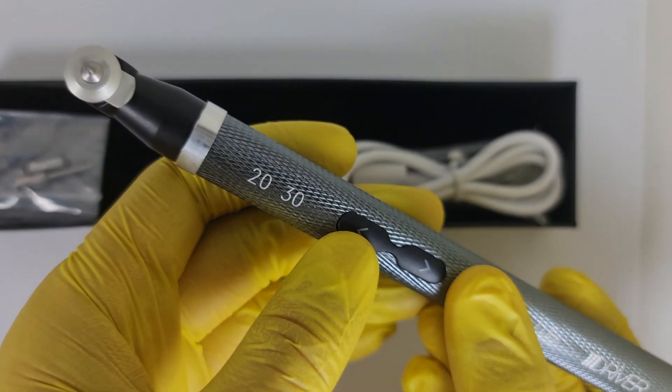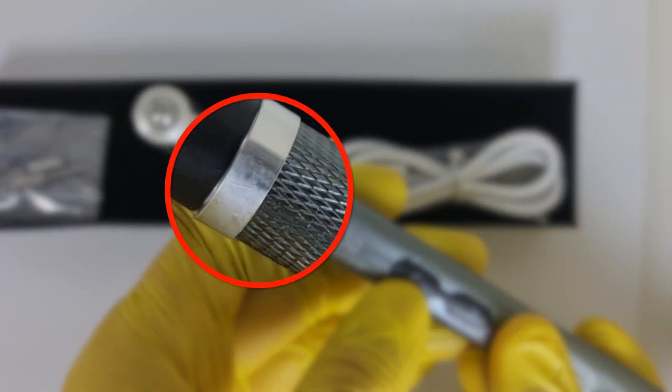The LED ring is the indication of torque you are working in. If it blinks once you're on 20, if it blinks twice you're on 30 newton centimeters.